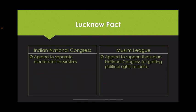In the Lucknow session of the Indian National Congress in 1916, under the leadership of Lokmanya Tilak, an attempt was made to resolve the dispute in the Indian National Congress. In the same year, there was an agreement between the Indian National Congress and the Muslim League known as the Lucknow Pact. According to this pact, the Indian National Congress agreed to separate electorates for Muslims, and the Muslim League agreed to support the Indian National Congress in getting political rights for India.